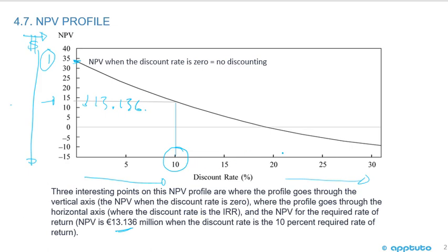The next point is where the discount rate makes the net present value equal to zero, and that would be our internal rate of return. You can see it's somewhere under 20% — perhaps that's 18%. That would be our IRR.